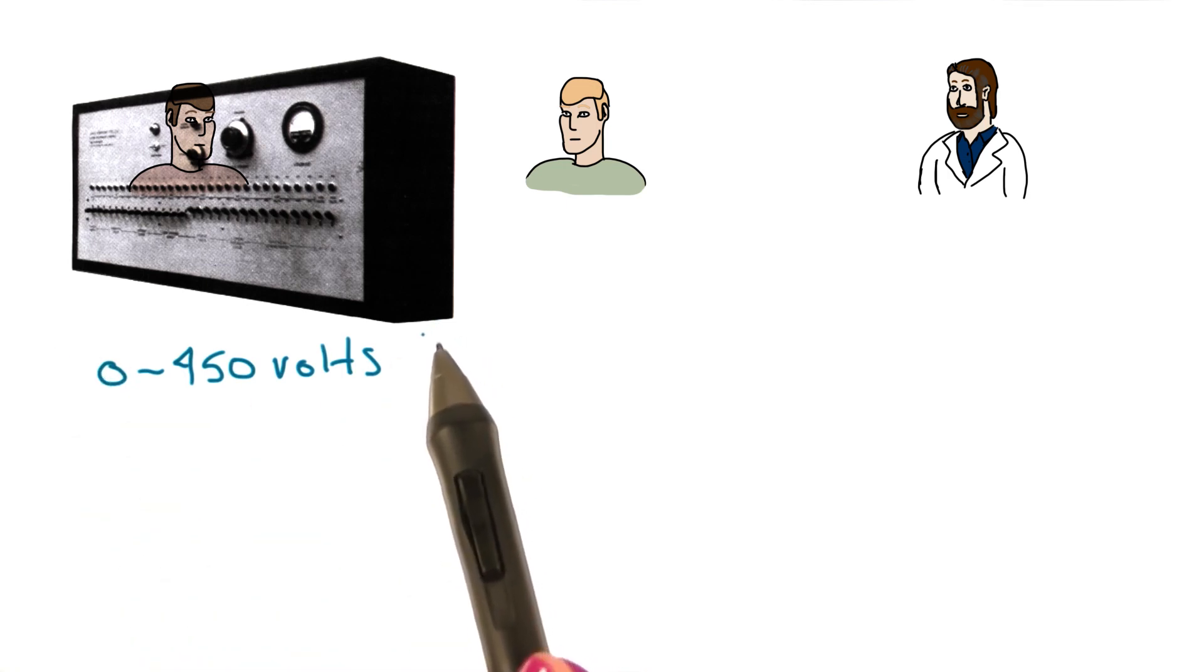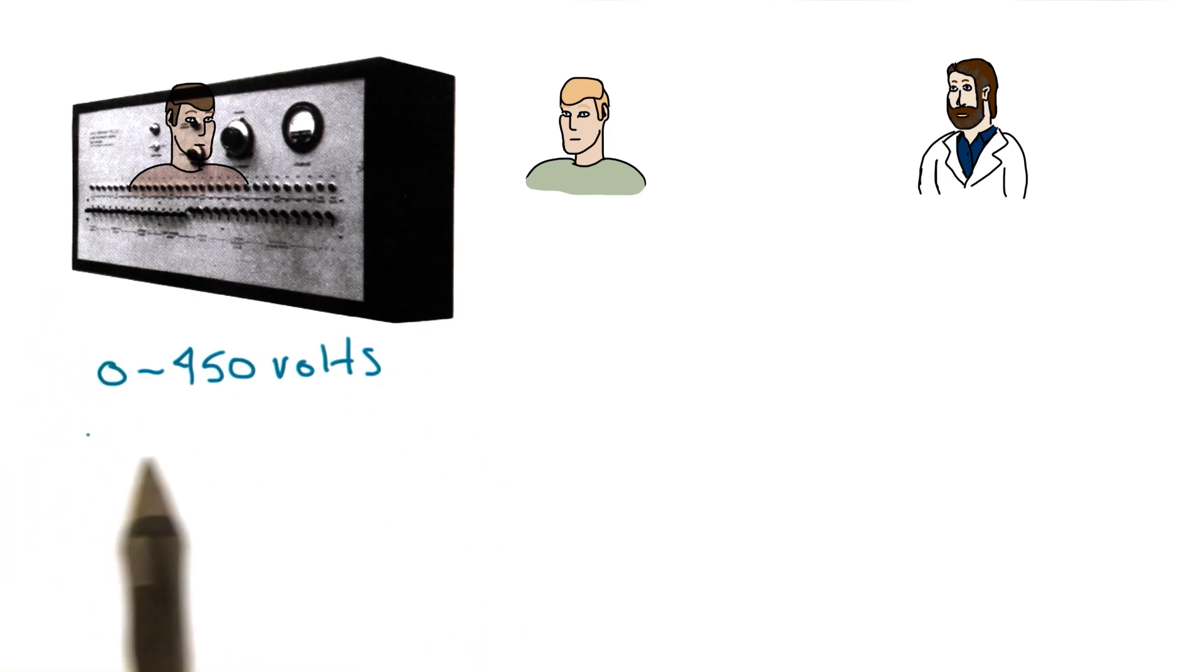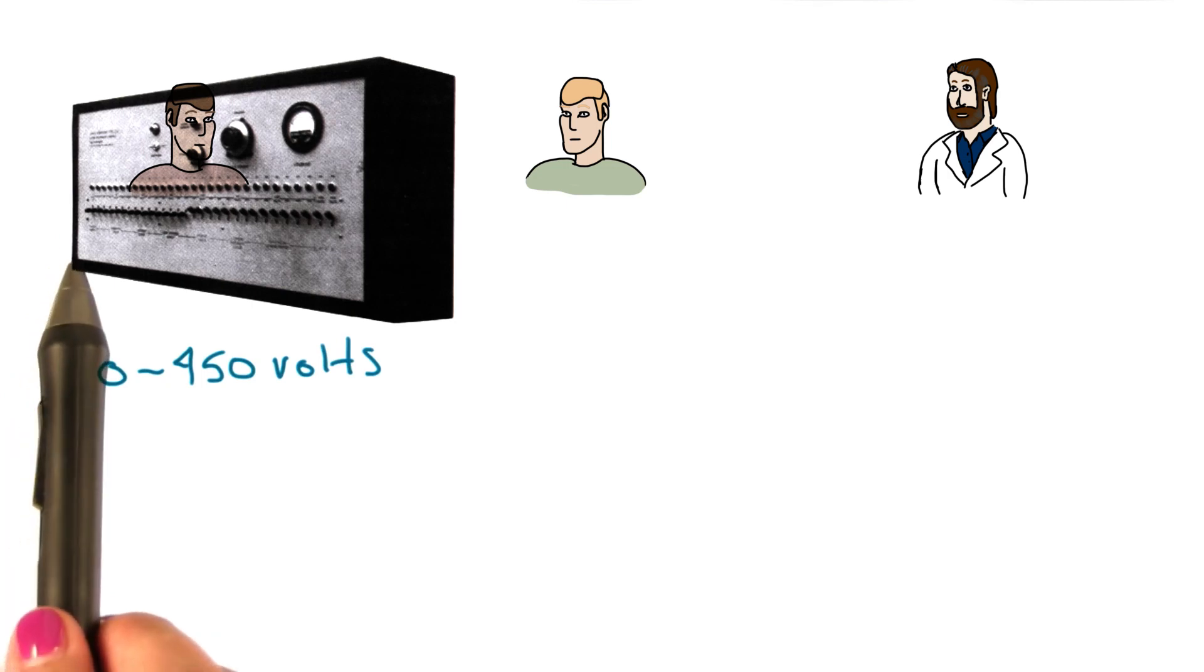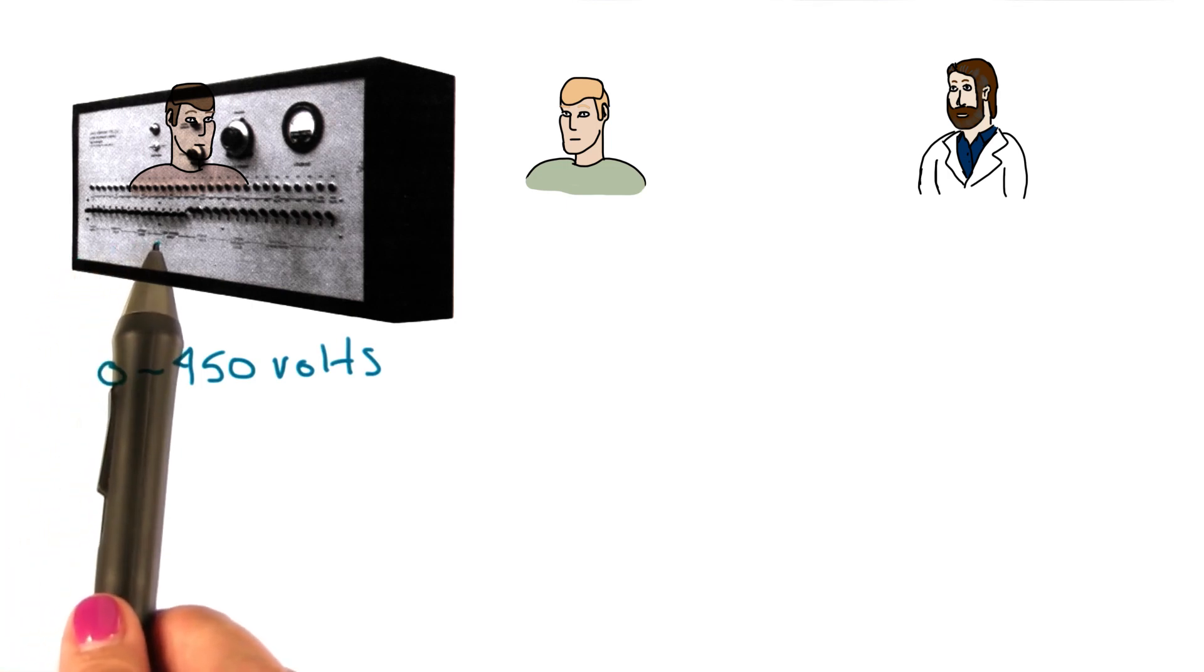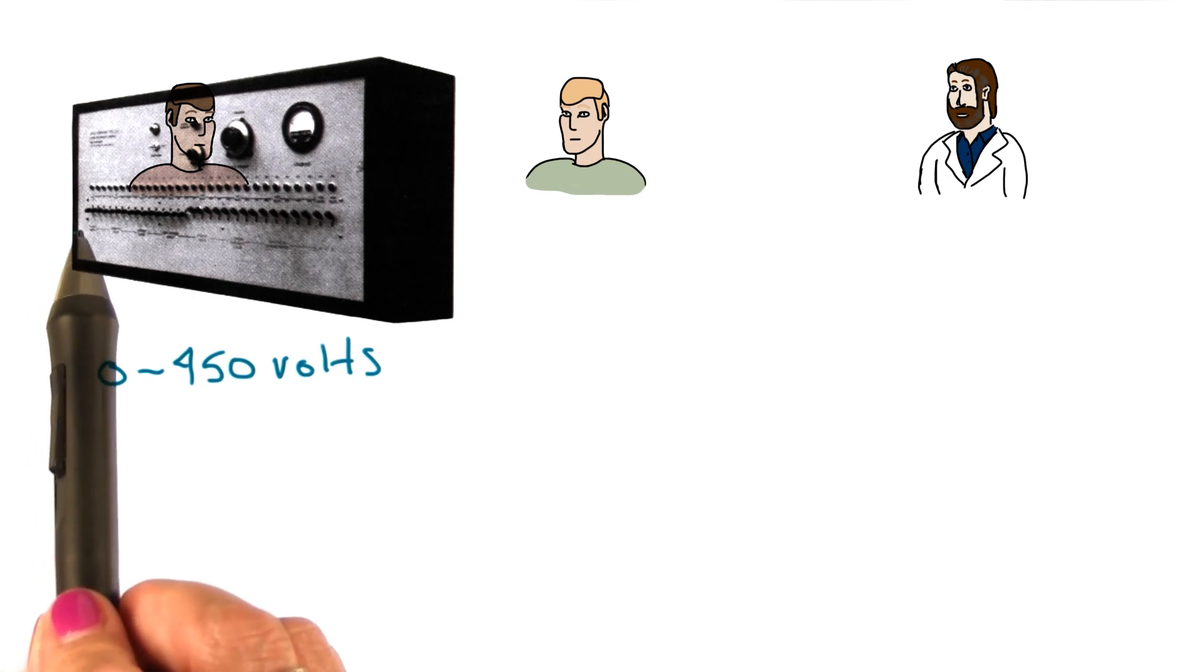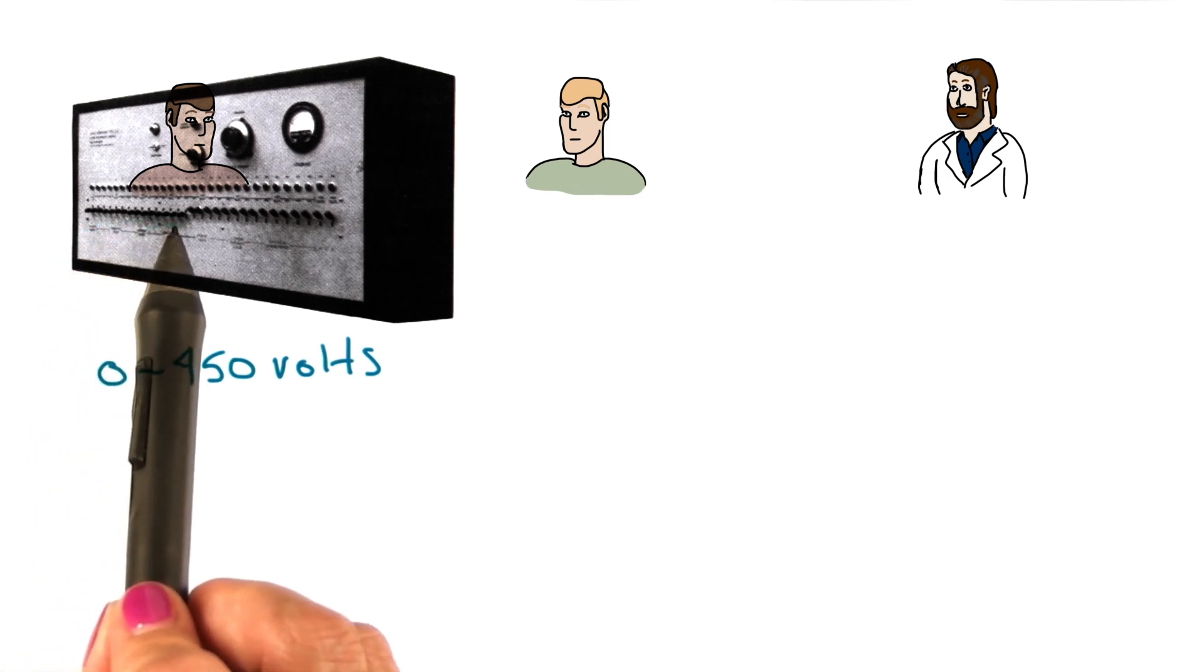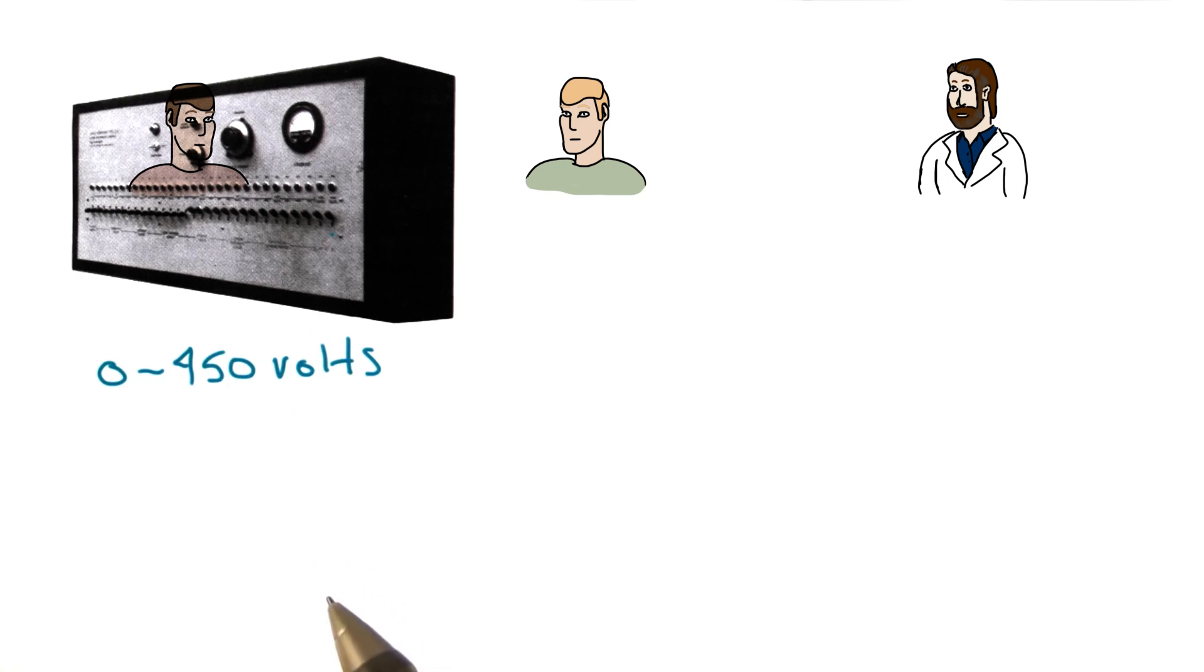Milgram instructed the teacher to provide a shock for every incorrect response. And they would start at the low end of the shock generator, and with each consecutive incorrect response, the teacher had to provide a shock. And that went up on the shock generator to 450 volts.